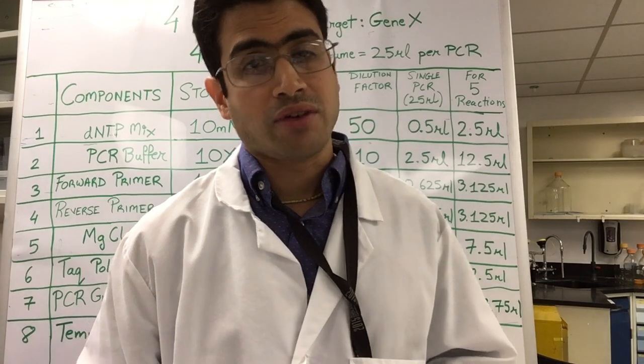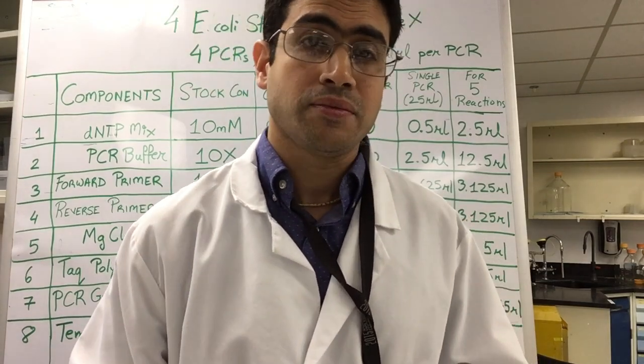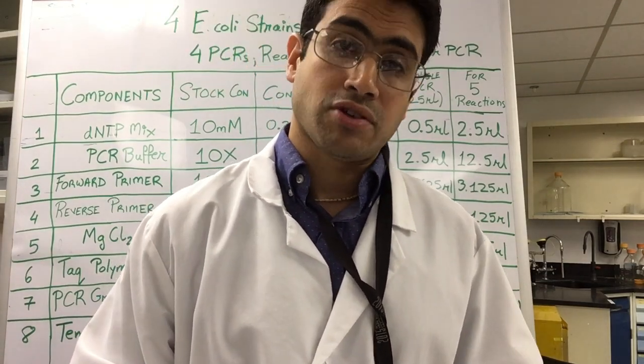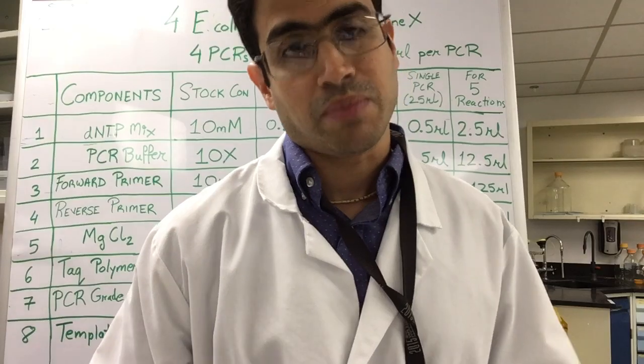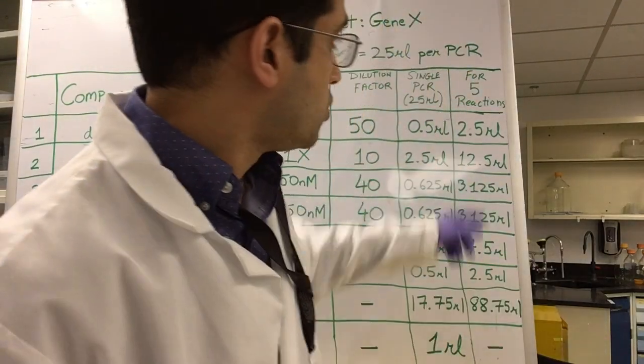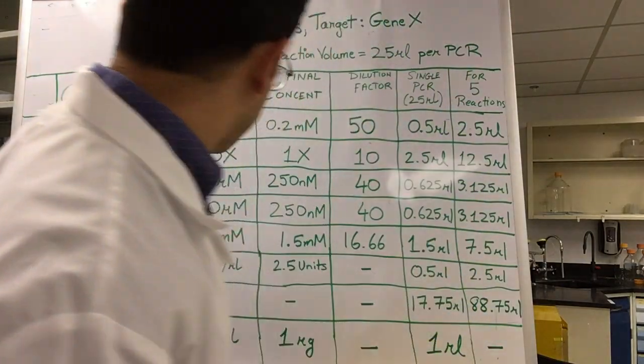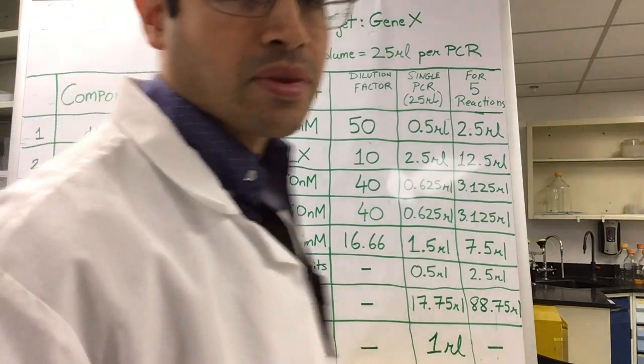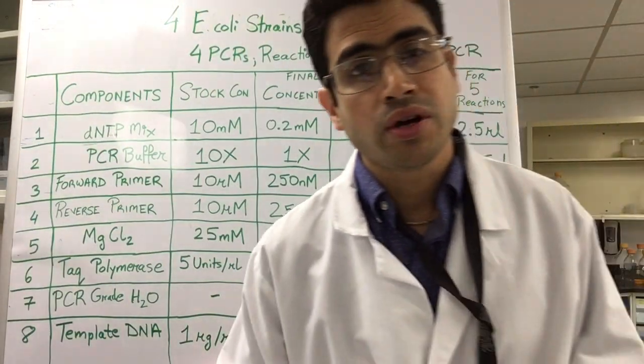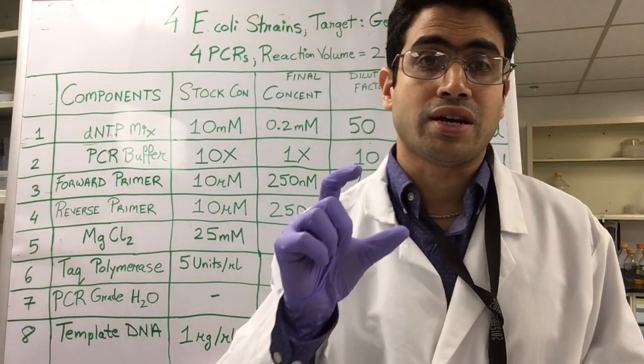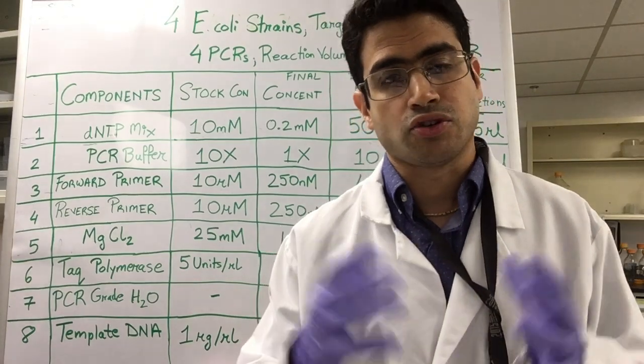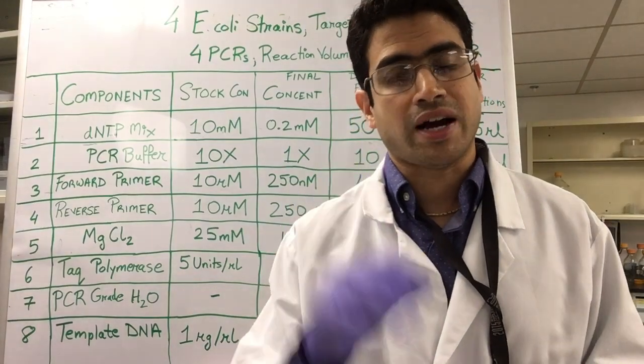You will however notice that I've actually done the calculation for five reactions instead of four. The reason I have accounted for an additional reaction is to make up for any errors that could occur during pipetting. So these are the volumes for each of these ingredients over here. This will give you a volume of 120 microliters. This is your bulk master mix for five reactions.